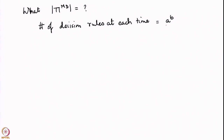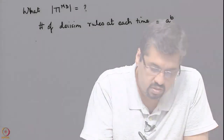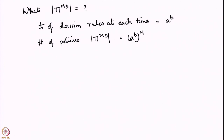The reason is we have a choices for each state and there are b states, so you get a times a times a, b times - that gives you a to the power b. Since we have n time steps, the number of policies is a to the power b, to the power n - in other words, a to the power b times n.